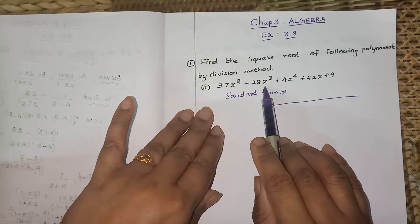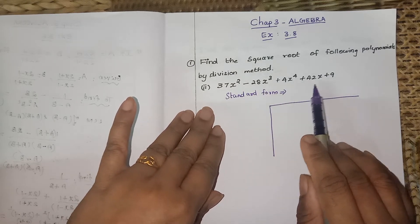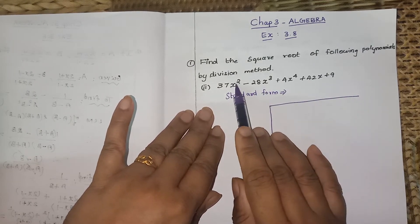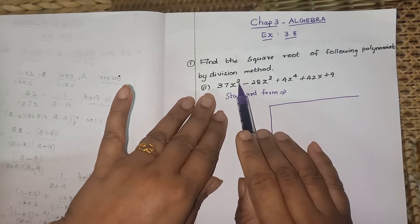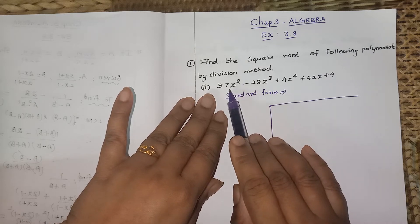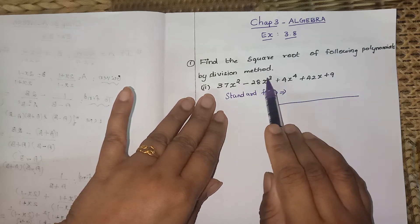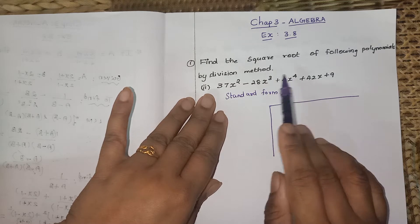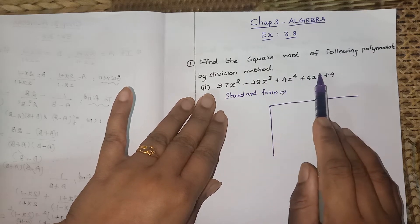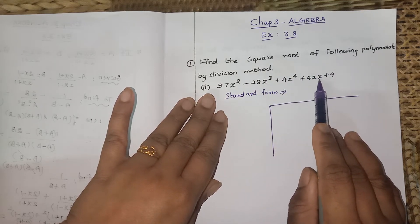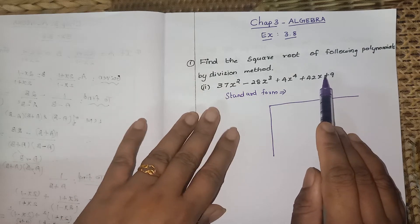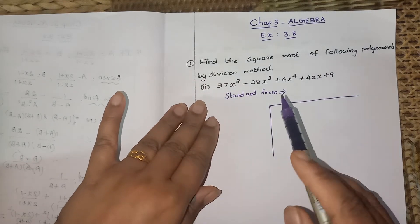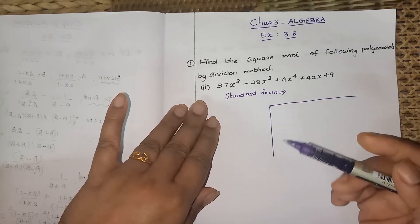First, check whether the polynomial is in standard form. Standard form means the degrees are in ascending or descending order. Looking at the terms: power 2, then 3, then 4 — that's increasing, but then it goes back to x and constant (power 0). So this is not in the correct form; you have to rewrite it in ascending or descending order.